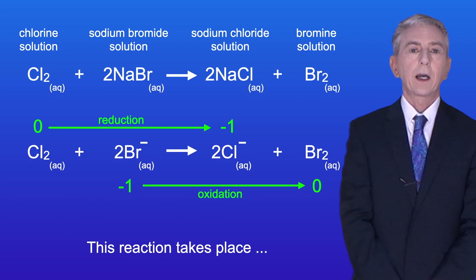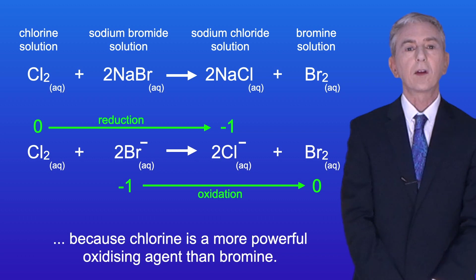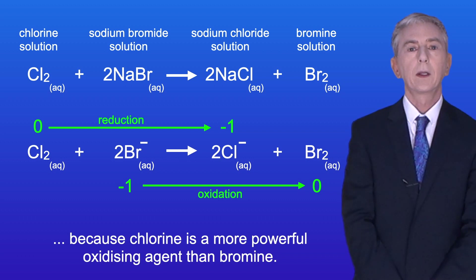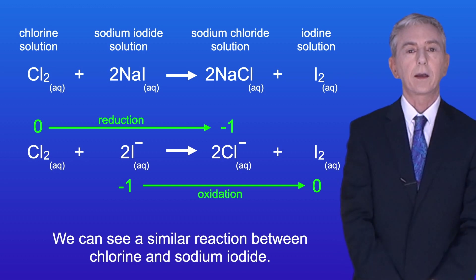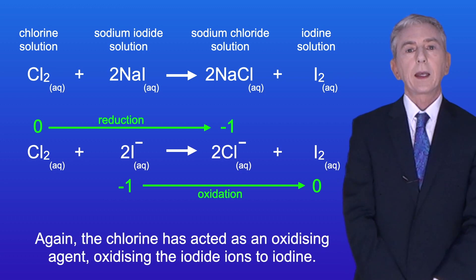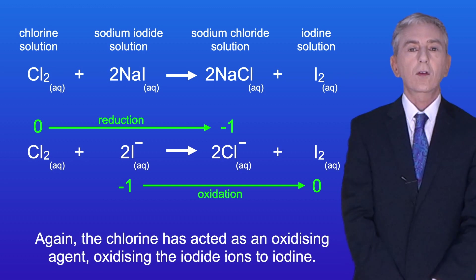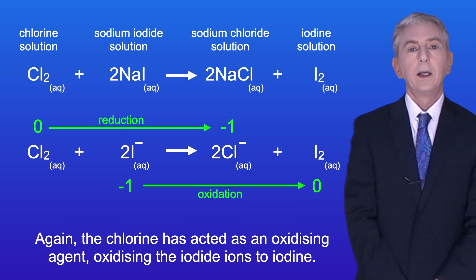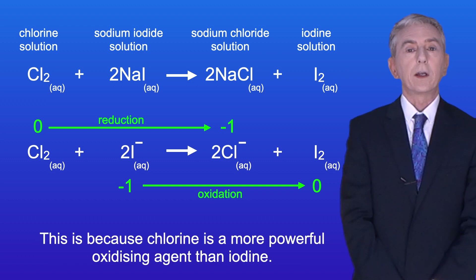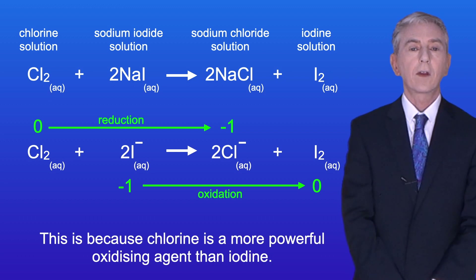This reaction takes place because chlorine is a more powerful oxidizing agent than bromine. We can see a similar reaction between chlorine and sodium iodide. Again the chlorine has acted as an oxidizing agent, oxidizing the iodide ions to iodine, and again this is because chlorine is a more powerful oxidizing agent than iodine.